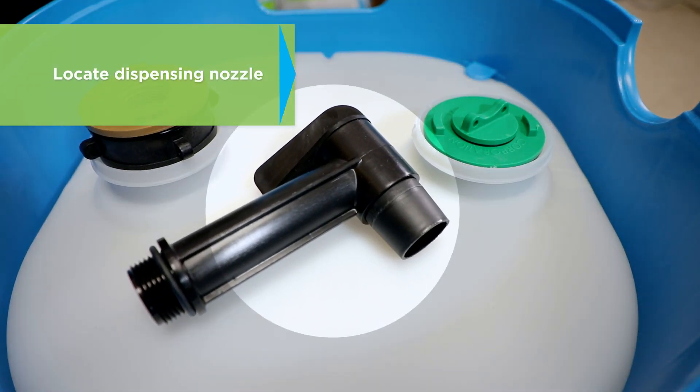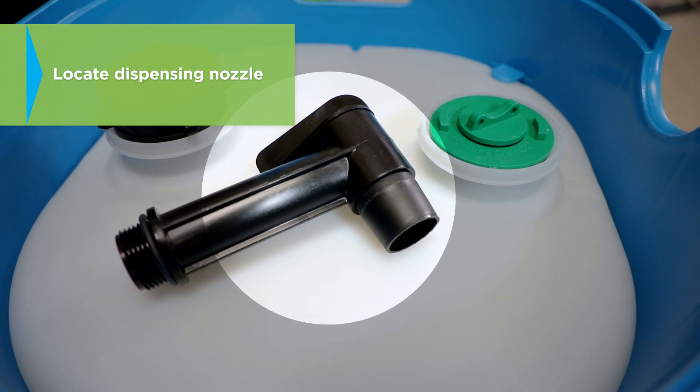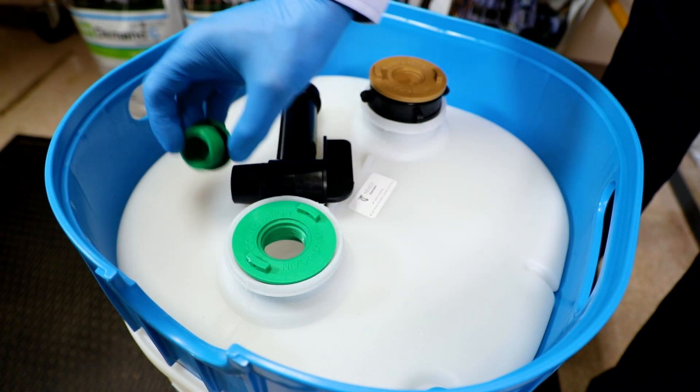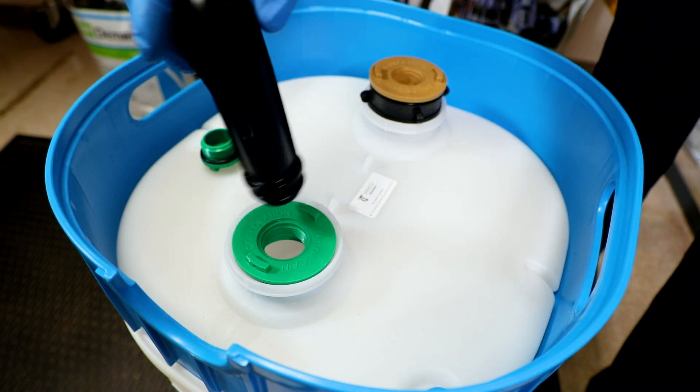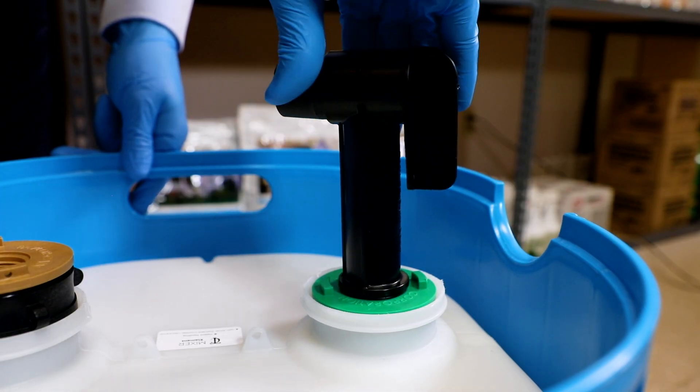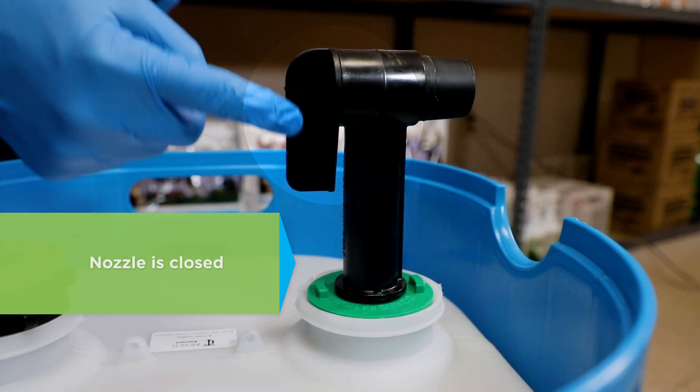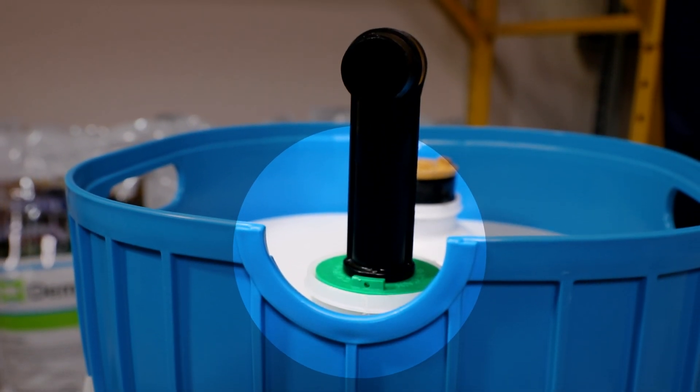Next, find the dispensing nozzle, which is conveniently included with the drum. Remove the knockout from the bung and tightly screw in the dispensing nozzle. Make sure it's closed and faces downward toward the U-shaped opening of the drum lip.